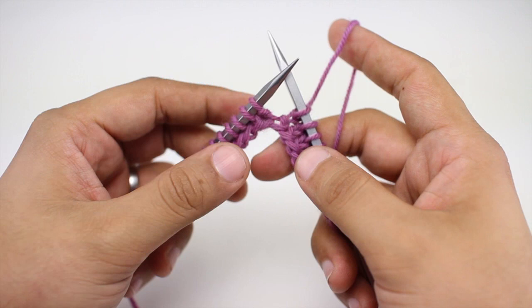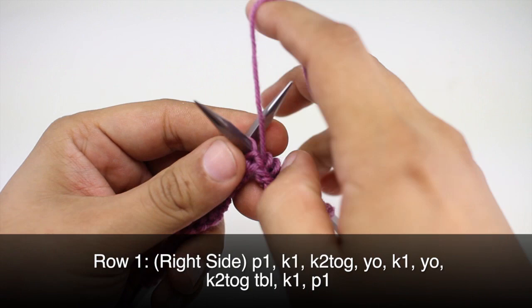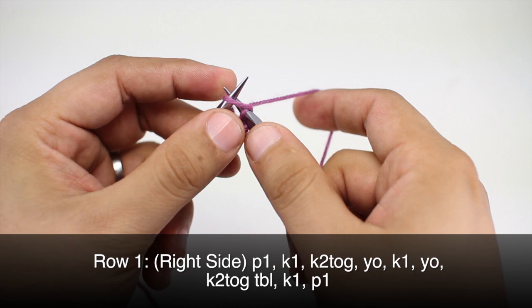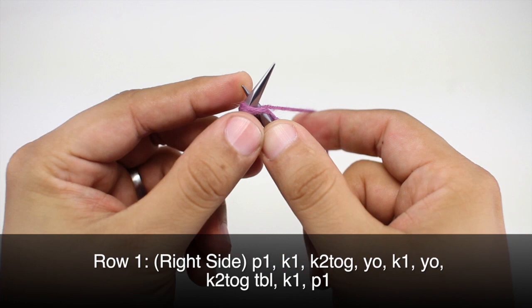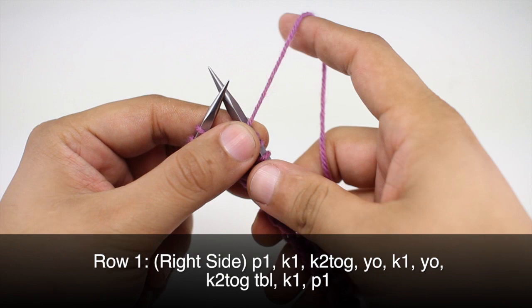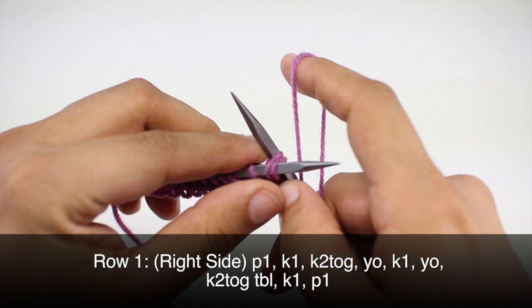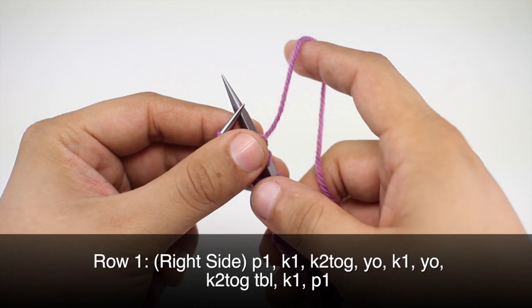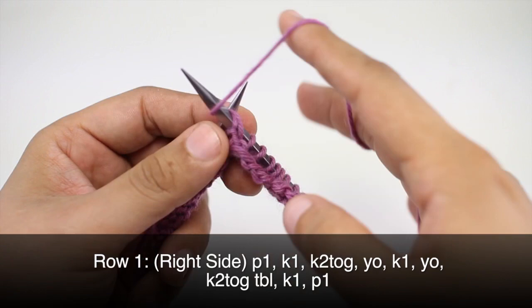Row one: we're going to begin by purling one. Then we're going to knit one. Then knit two together. Next we're going to yarn over and knit one. Then we will yarn over again. And we will knit two together through the back loop. So we'll go purlwise through these two stitches coming through the back side and knitting those two together. Then we are going to knit one and we'll finish by purling one.